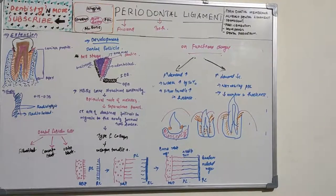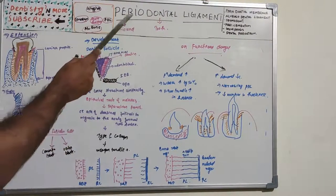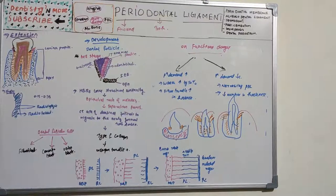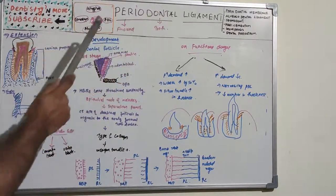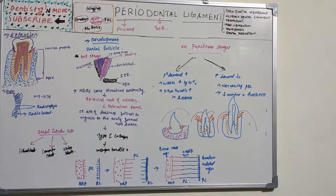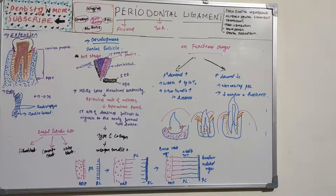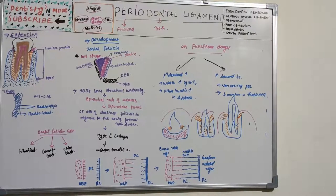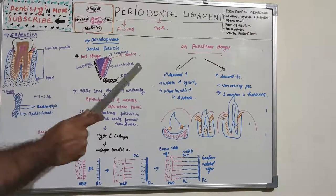The name itself gives an idea: 'peri' means around and 'dont' means tooth, so periodontal ligament is the ligament surrounding the tooth. It is defined as a connective tissue that surrounds the root and connects it to the bone. This orange color in the diagram represents the periodontal ligament — it starts from the root to the bone.